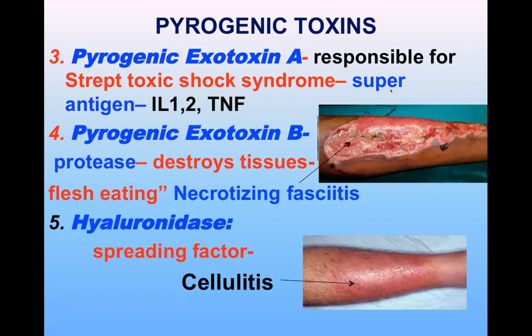Pyrogenic exotoxin A is responsible for streptococcal toxic shock syndrome, which is similar to staphylococcal toxic shock syndrome in signs, symptoms, and mode of action — acting as a superantigen releasing massive cytokines from helper T cells and macrophages. Exotoxin B is a protease that rapidly destroys tissue and is produced in large amounts, causing necrotizing fasciitis — the so-called flesh-eating streptococci.